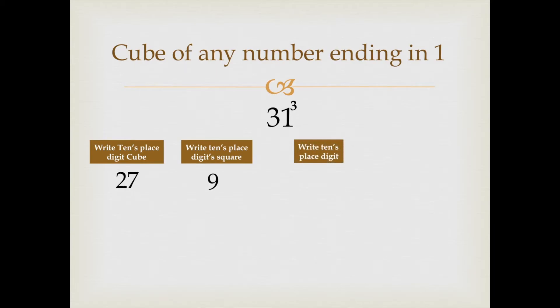In the third part, we will write down the 10th place digit as it is which is 3. And in the last step, we will write down the 1st place digit which is 1 as it is.